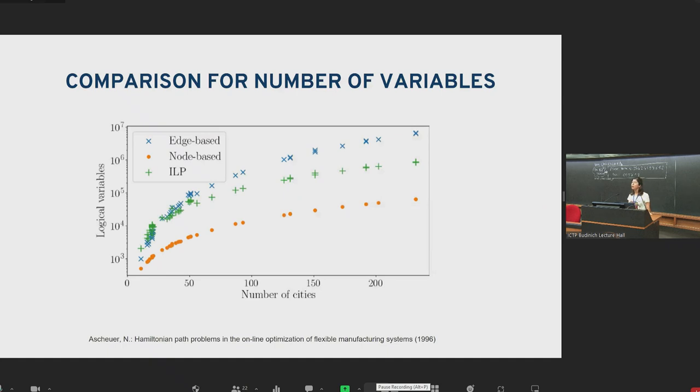To compare the number of variable requirements by each model, we tried some real life instances with large number of cities. In this graph, you can see this. As you can see for 200 cities, the number of required variables reached 10 to the 6 for the edge-based model. So from the asymptotics, this was expected. You can see that node-based is the best. However, it's not quadratic. So that's the problem with that.